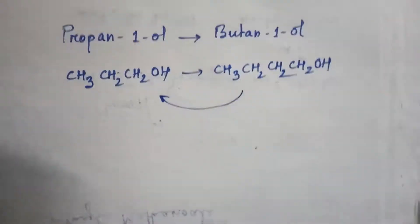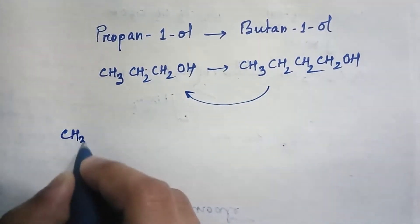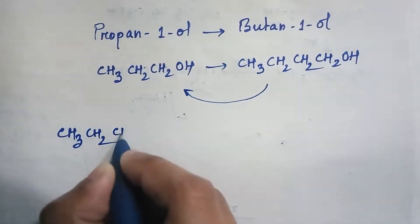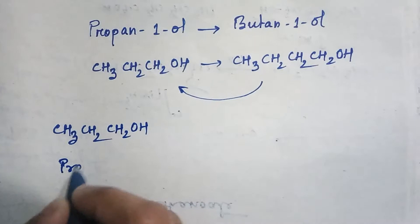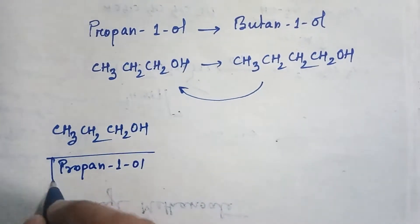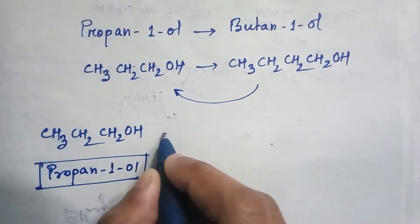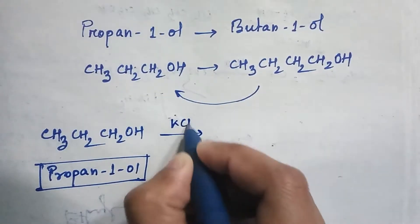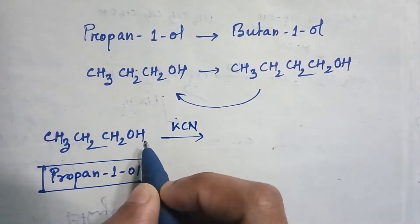Let's start. First we will take propane-1-ol. This is the starting material. Now if we use potassium cyanide (KCN), then this OH will be replaced by cyanide.